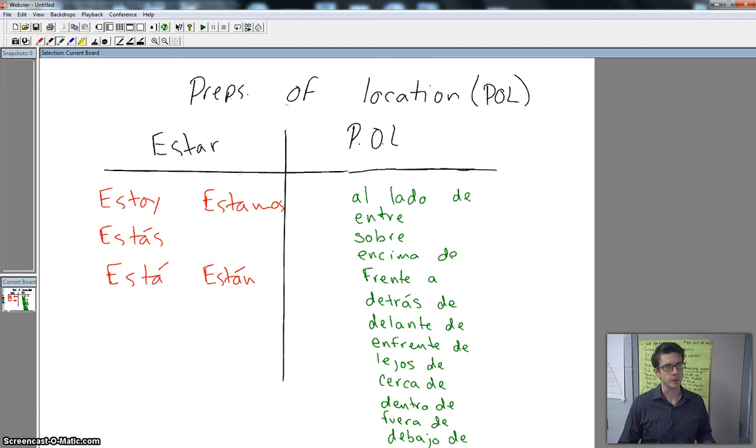Alright, think about it. We've talked about it in the past, what we use estar to describe and to express, and one of those things was location. So estar will be the verb that we use with our prepositions of location. So take a quick moment because I'm getting ready to erase this and jot these down.